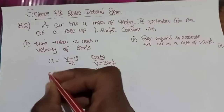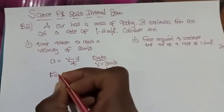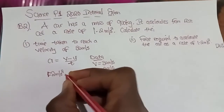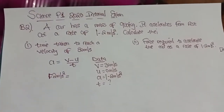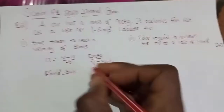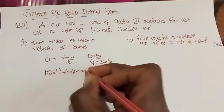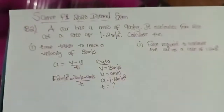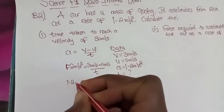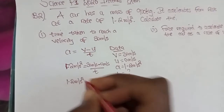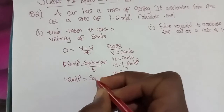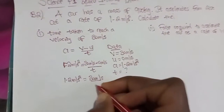We're going to substitute: acceleration equals 1.2 m per second squared. Whenever you are solving physics, always ensure to be working with the SI units. For the final velocity, 30 m per second, then minus 0 m per second, over time. So we have: 1.2 m per second squared equals 30 m per second minus 0, which gives 30 m per second, over time t.